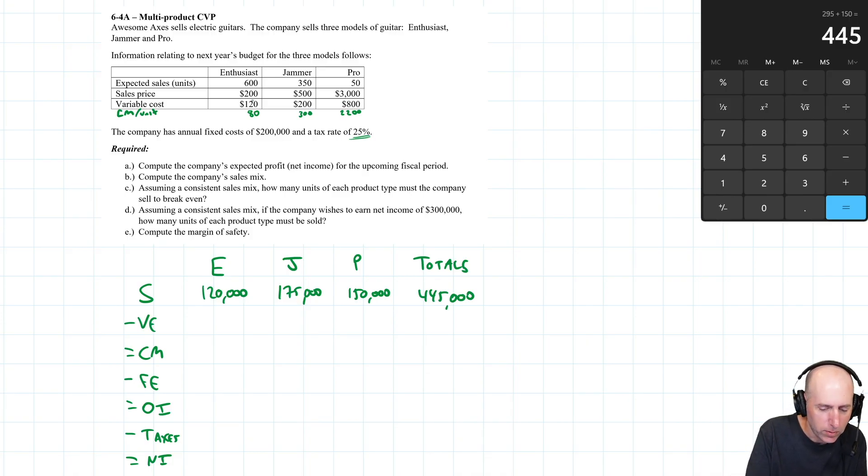Our variable cost: 600 times 120 is 72,000. 200 times 350 is 70,000. For the Pro, 800 times 50 is 40,000. Total here is 182,000.